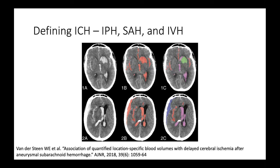I'll predominantly focus on IPH today. Aneurysmal subarachnoid hemorrhage and interventricular hemorrhage are whole other etiologies. But oftentimes they come together — if you have an intraparenchymal hemorrhage in the thalamus, for example, it's very common for it to spill over into the third ventricle, cause interventricular hemorrhage, and then recycle through into the subarachnoid space. ICH really represents a broad array of different types of brain hemorrhage.